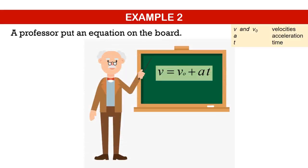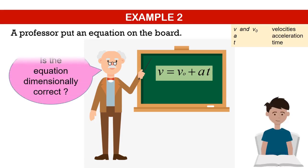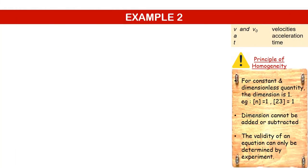Let us verify the homogeneity of some equations. Example 2. A professor put an equation on the board: v equals v0 plus at, where v is the velocity, a is acceleration, and t is time. Is the equation dimensionally correct? To do this, we need to check on each term whether they have the same dimension.